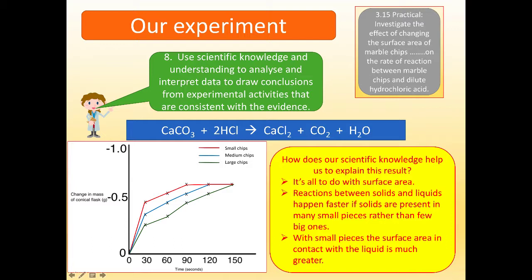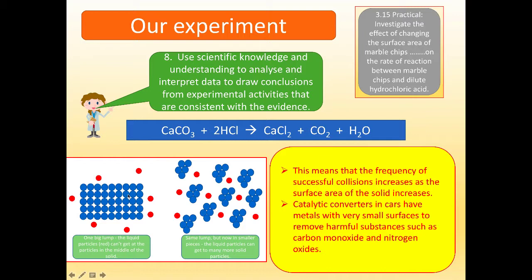What scientific knowledge have we got? Well, it's all to do with the surface area. Reactions between solids and liquids happen faster if solids are present in many small pieces rather than a few big ones. With small pieces, the surface area in contact with liquid is much greater. We can see that over here. Now, here we've got one big solid lump. Liquid particles in red can't get to particles in the middle of the solid. When we break up that solid lump into smaller lumps, same mass but smaller lumps, liquid particles can now get to many, many more solid particles, which is why the smaller chips reacted faster than the larger chips.